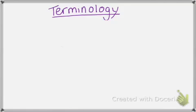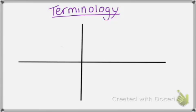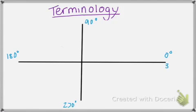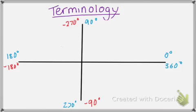Let's start with a little bit of terminology that we're going to need to know. Go ahead and draw a nice big xy axis. So we know that this is 0 degrees, 90 degrees, 180, 270, 360. Now we know that we can also go negative, and when we go negative we work backwards. So this is negative 90, negative 180, negative 270, and negative 360.